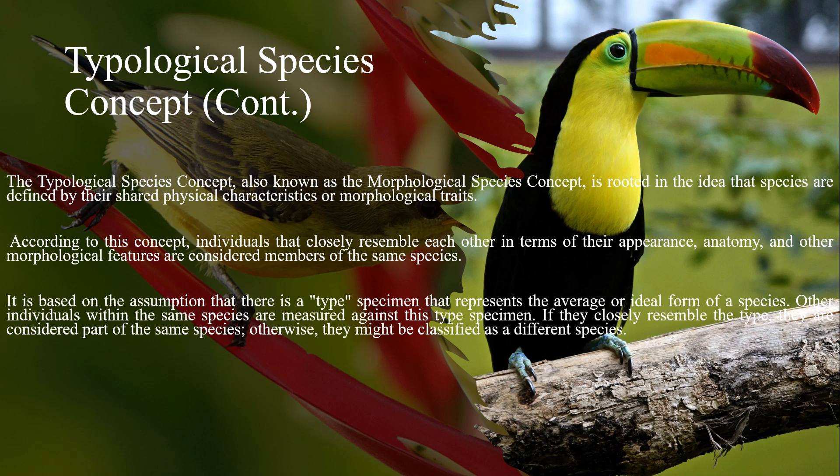According to this concept, individuals that closely resemble each other in terms of their appearance, anatomy, and other morphological features are considered members of the same species. It is based on the assumption that there is a type specimen that represents the average or ideal form of a species. Other individuals within the same species are measured against this type specimen — if they closely resemble it, they are considered part of the same species; otherwise, they might be classified as a different species.